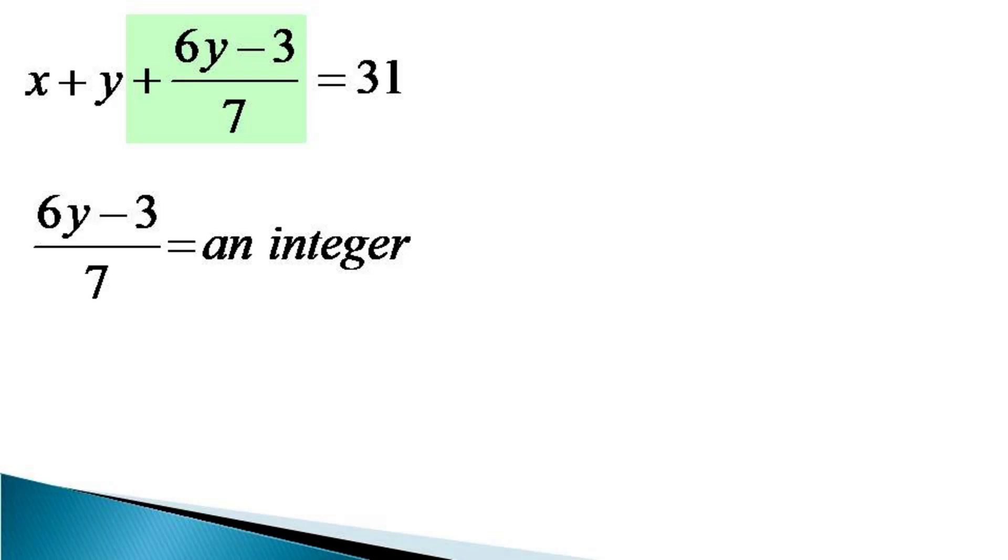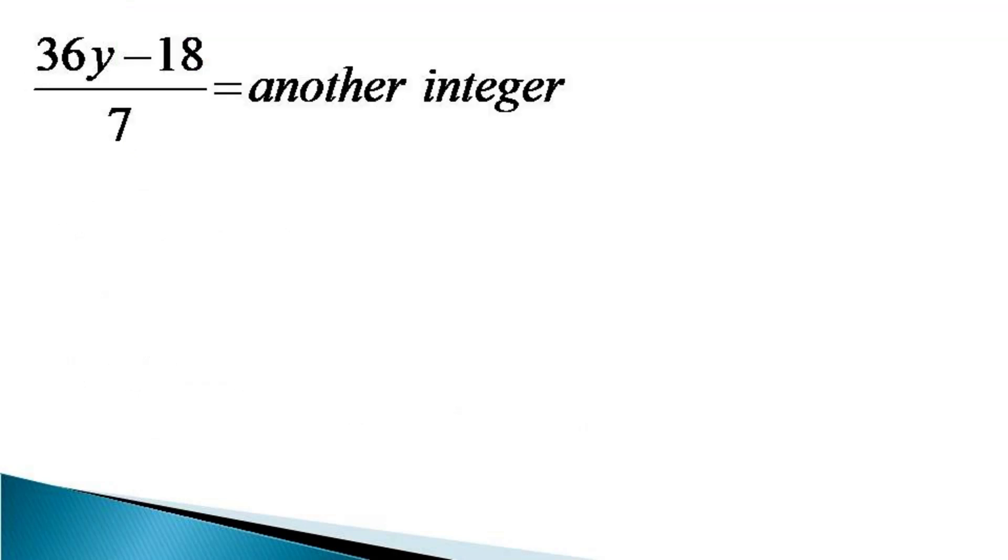6 times 6 equals 36, and 7 goes 5 times into 36 with a remainder of 1. So we multiply this whole expression by 6, and this multiplication will result in another integer. The multiplication makes it (36y - 18)/7, which is another integer.